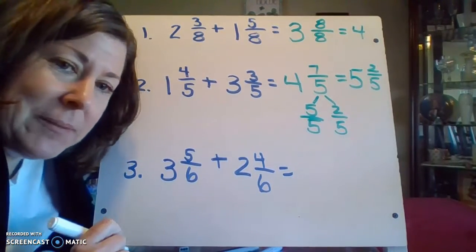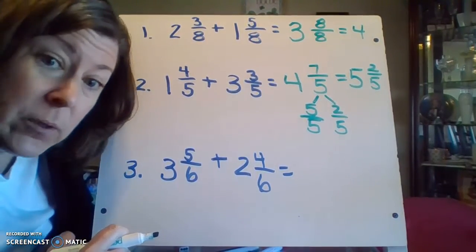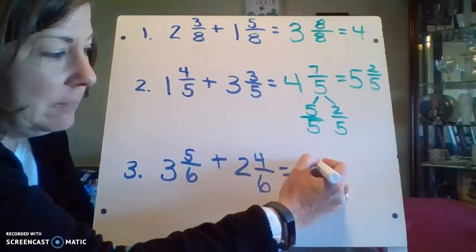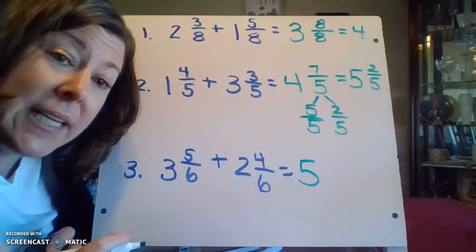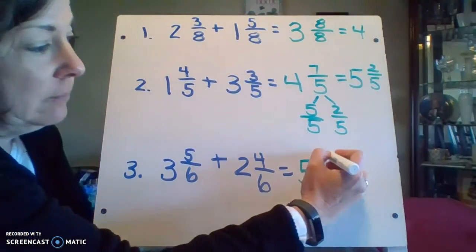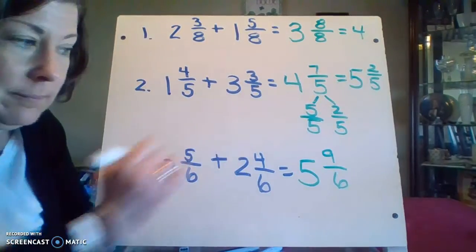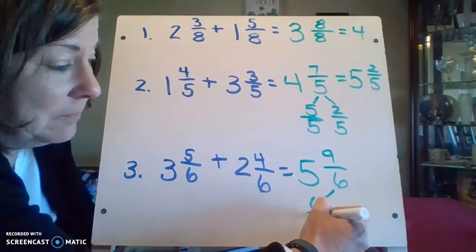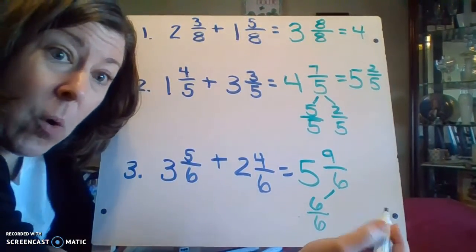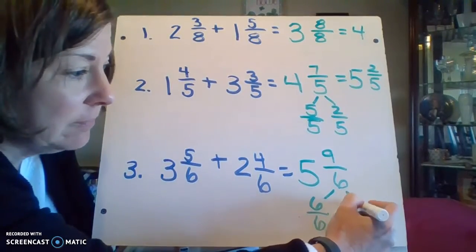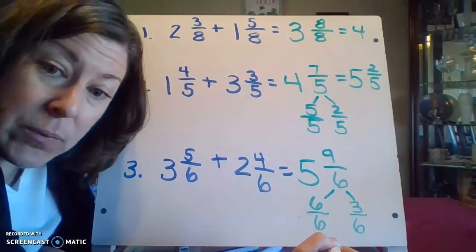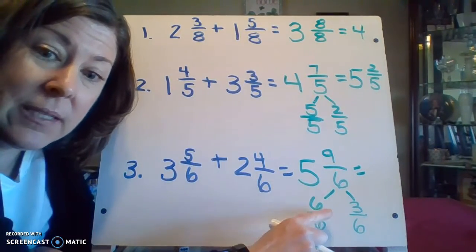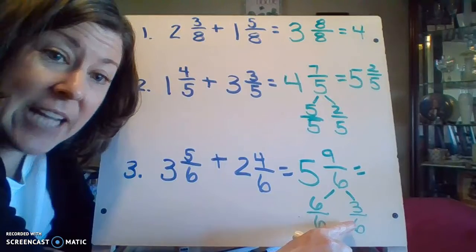And my last example. Three and five-sixths plus two and four-sixths. Start with my ones. Three and two is five. Five-sixths plus four-sixths equals nine-sixths. Not going to leave it like that. Pull out one, one whole. Still have an extra three-sixths. So my final answer, five, six, and three-sixths.